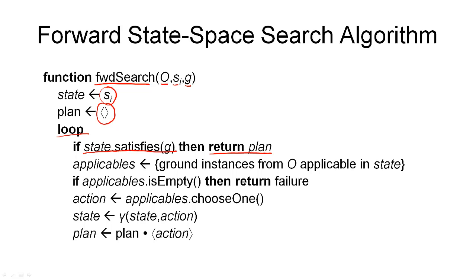If not, we have to continue. What we have to do next is compute the state transition function by computing all the ground instances from all the operators defined in our planning problem that are applicable in our current state. This gives us the set of applicable actions in our current state. Now, if this set was empty — if there are no applicable actions in the current state — then we can return failure, meaning we have exhausted our search space and haven't come across a solution.